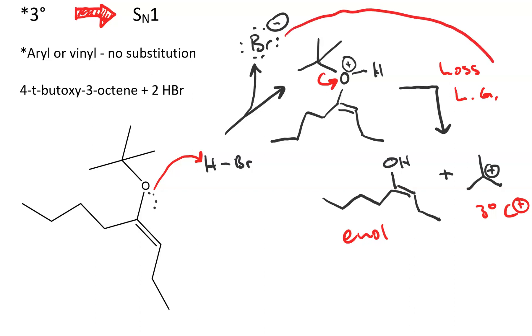We will then have nucleophilic attack by the bromide on the carbocation to give us our t-butyl bromide.